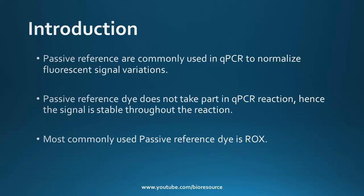Passive reference dyes are commonly used in qPCR reactions to normalize for non-PCR related fluorescent signal variation. The passive reference dye does not take part in the qPCR reaction, so its signal is stable throughout the reaction. This provides a reference internal to the reaction to which the reporter dye signal can be normalized.